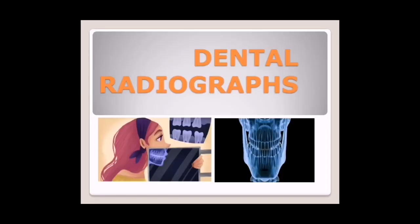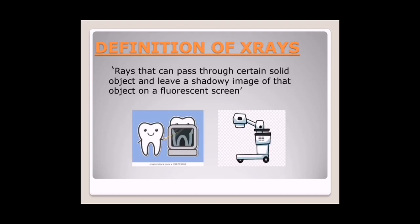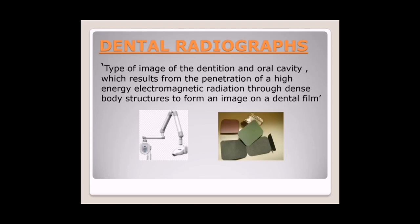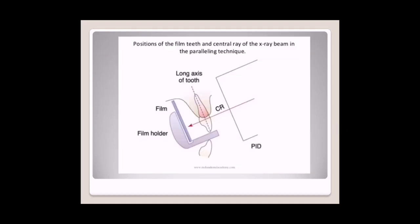Hello friends, today we are discussing about dental radiographs. To further proceed, we have to define what are X-rays. X-rays are rays that can pass through certain solid objects and leave a shadowy image of that object on a fluorescent screen. A dental radiograph is a type of image of the dentition and oral cavity which results from the penetration of high energy electromagnetic radiation through dense body structures to form an image on a dental film.